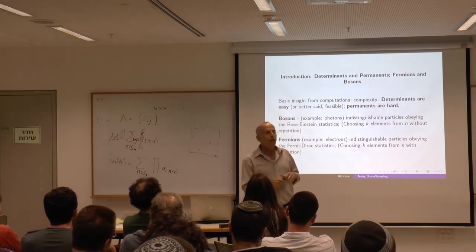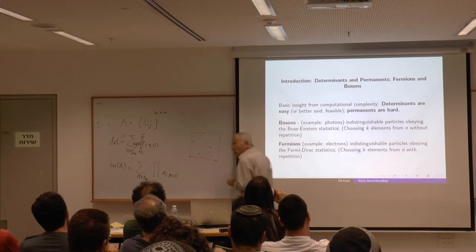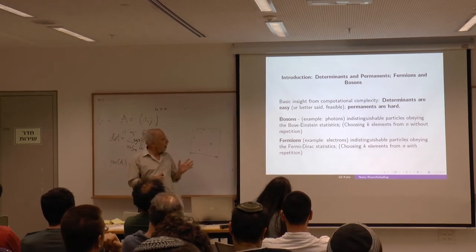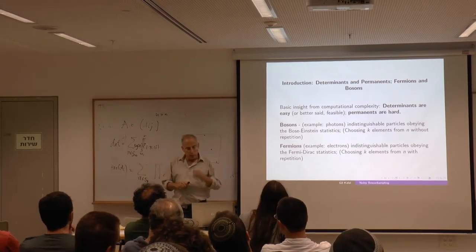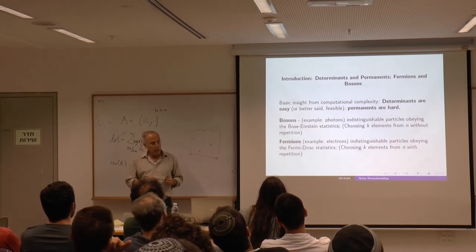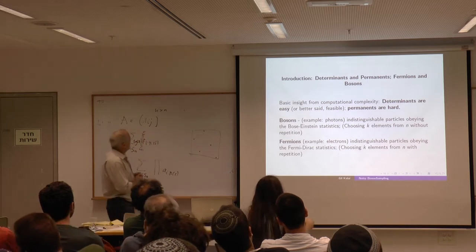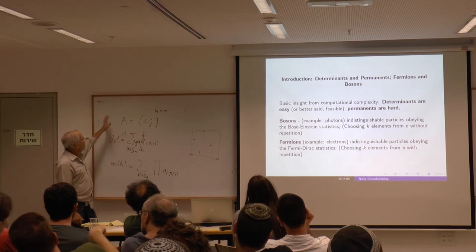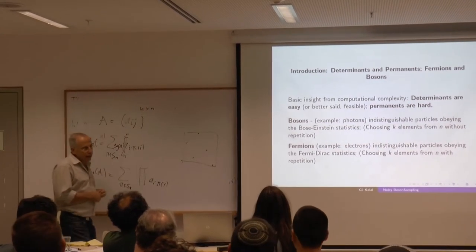Generally speaking, to compute or approximate general permanents is difficult. Now, there are some physical gadgets related to permanents and determinants. There are bosons — a primary example being photons — which are indistinguishable particles obeying Bose-Einstein statistics. The state of a boson system reflects, in a strong way, computing permanents. And there are fermions, also indistinguishable particles, but obeying Fermi-Dirac statistics, and computing their state requires a determinant.